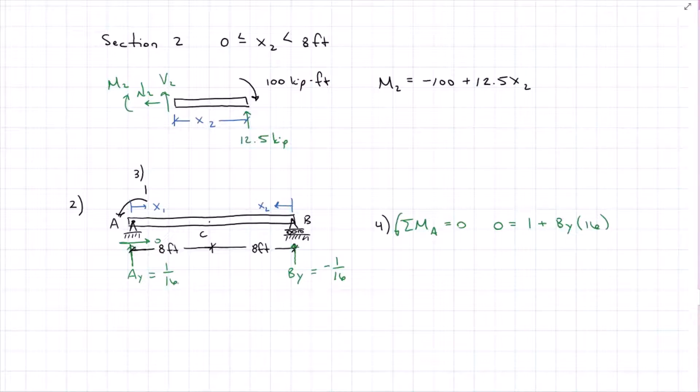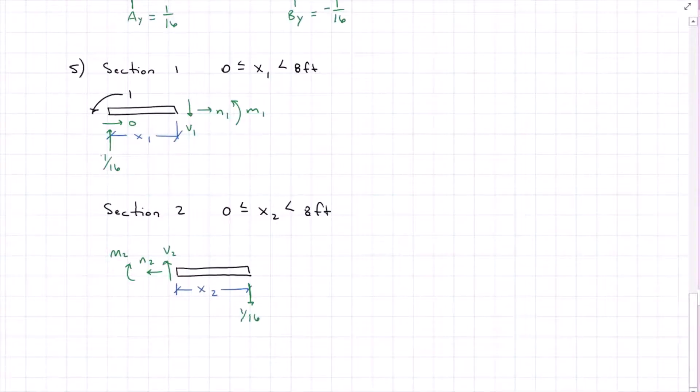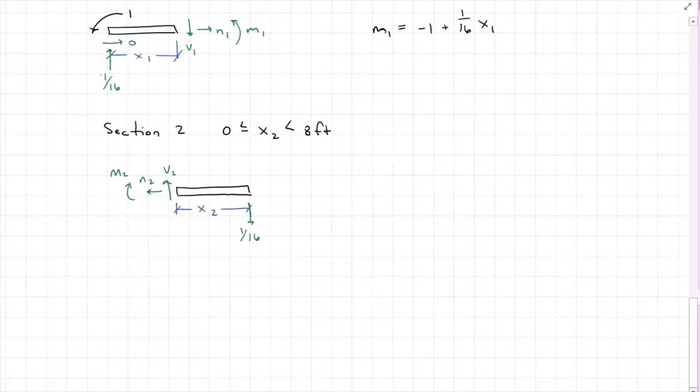Moving to step five, we're going to create the virtual moment equations using the same sections that we used last time. So you see here that I still have my blue X1 and X2, so now I'm going to make those moment equations. For section one, solving for my moment one equation with my virtual load, I have minus one plus 1/16th X1. And then for moment two, I have minus 1/16th X2.